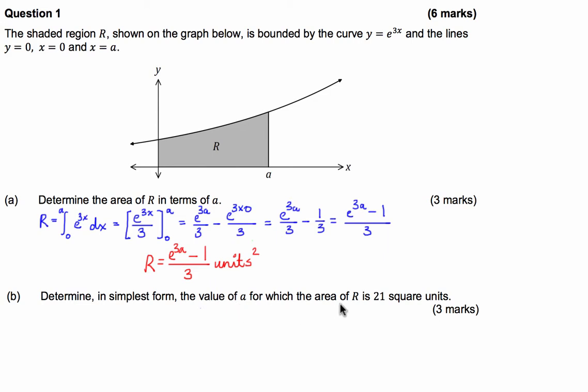So, we're going to get our solution from part a, and we're going to make it equal 21, and then solve for a. So, 21 is going to be equal to e to the 3a take 1 over 3.